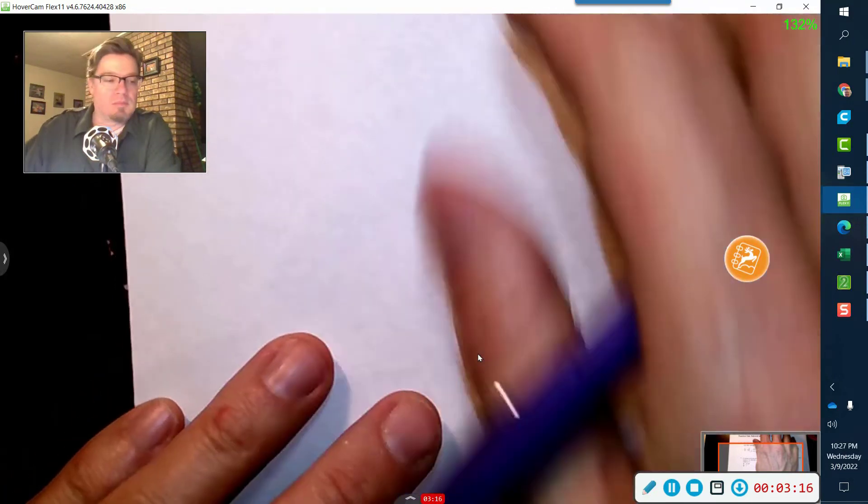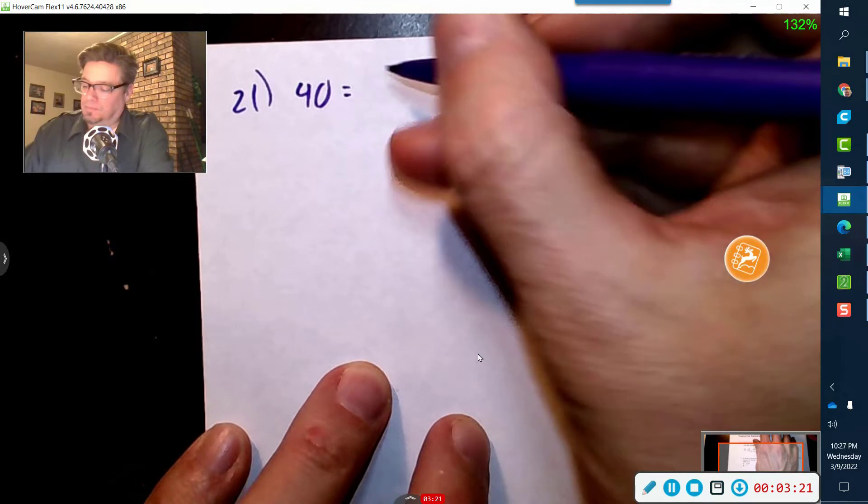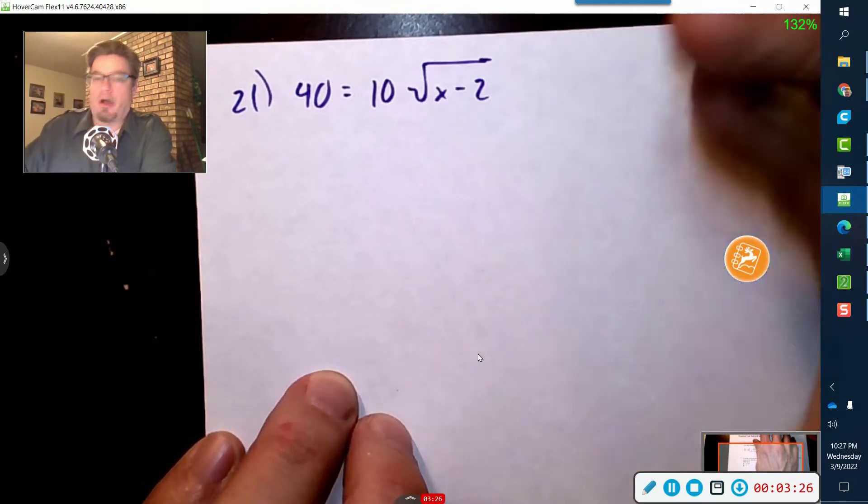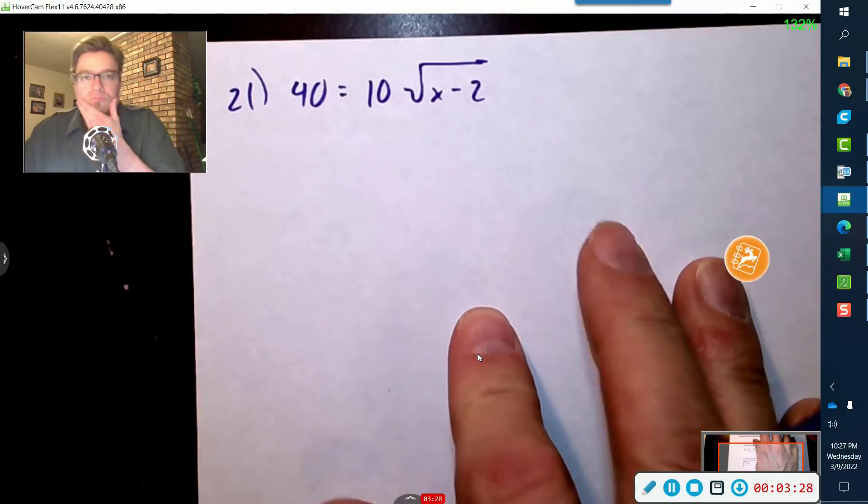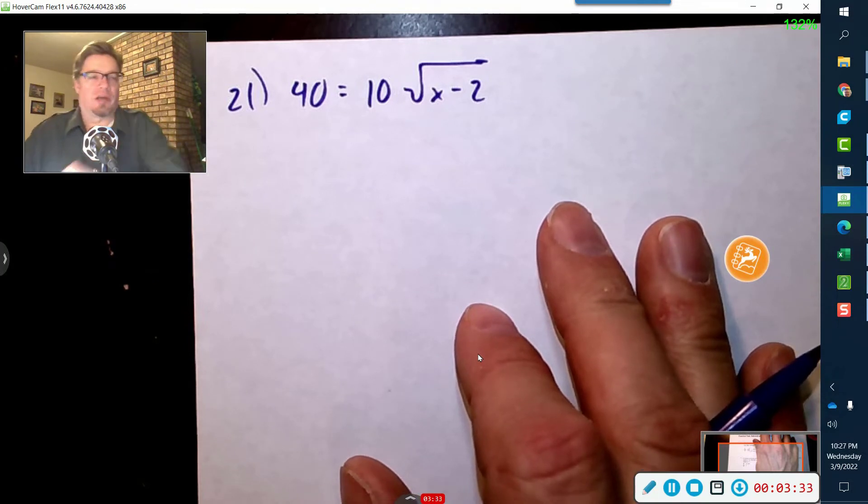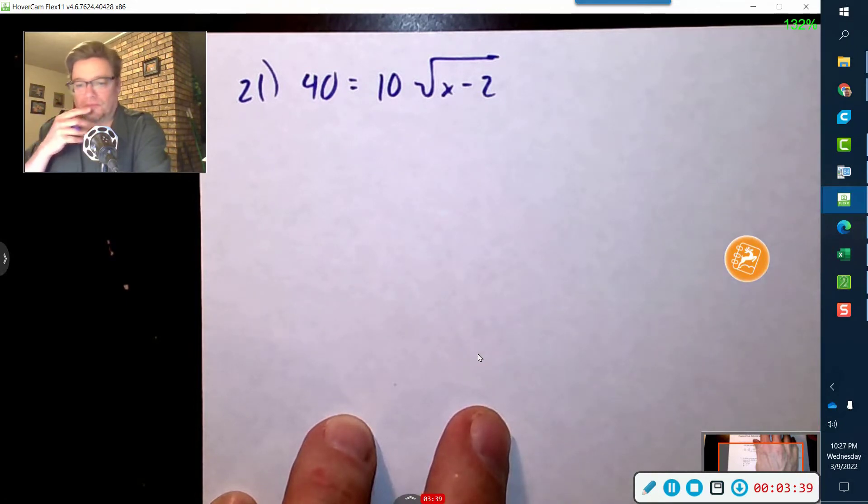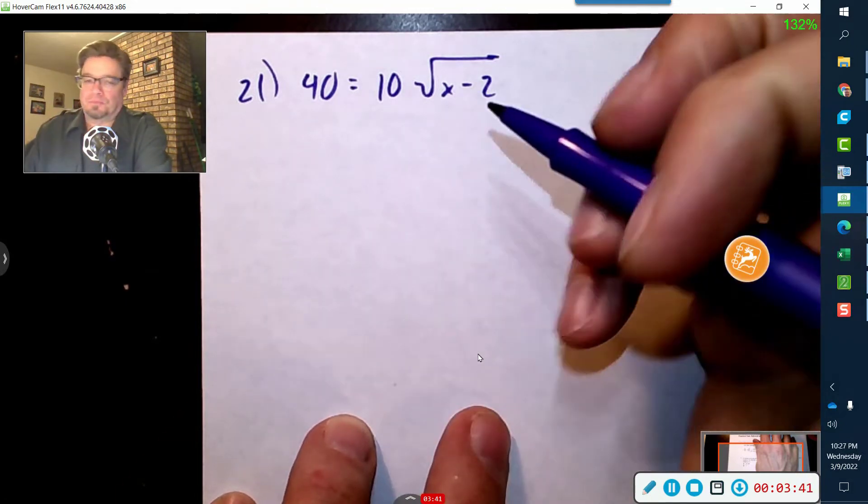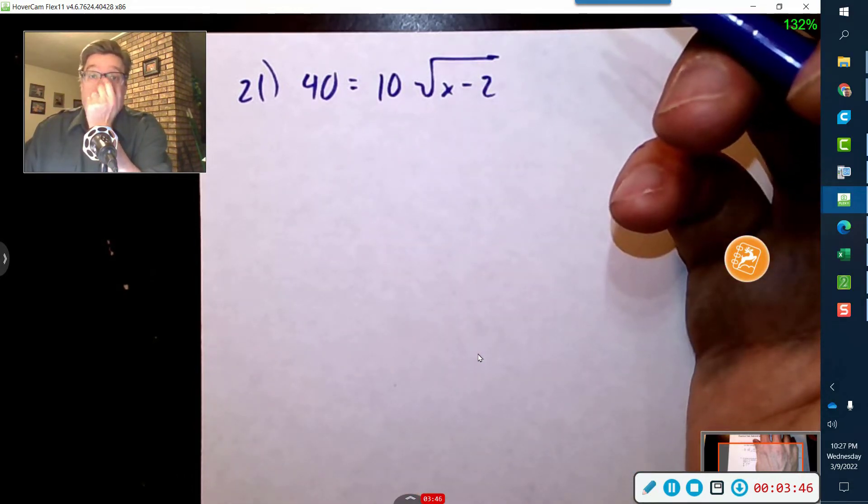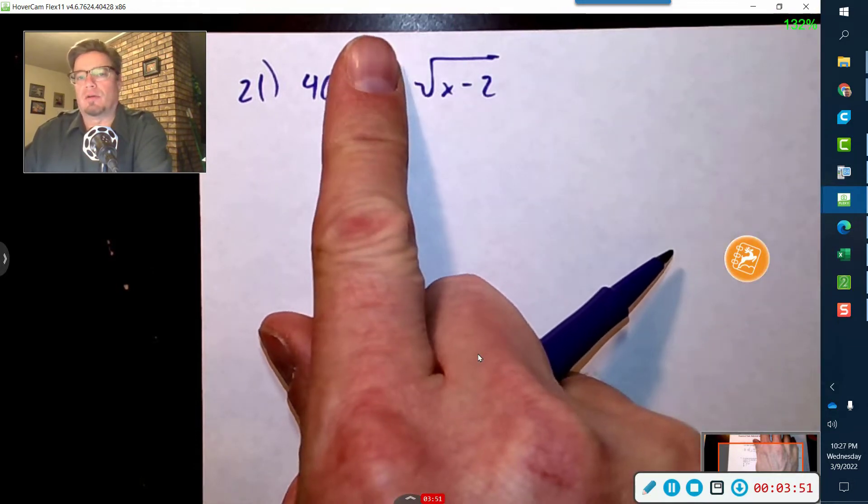All right, twenty-one. Sorry, I'm chewing into the microphone. I'm having a problem. All right. Now, you might be tempted to square both sides. I won't do that again. I won't take a bite while I'm doing this. I'll do it in between takes. You might be tempted to square both sides and it could work, but it's too much work. What you want to do first is you want to isolate the radical, then square it. Okay, so let's divide by ten first. So now that's four.